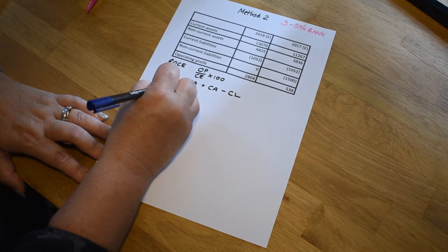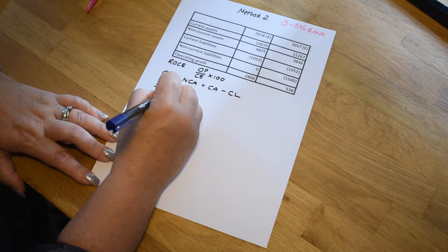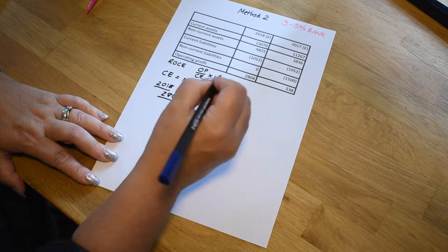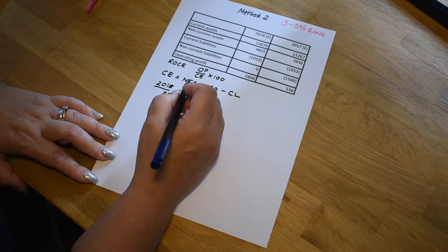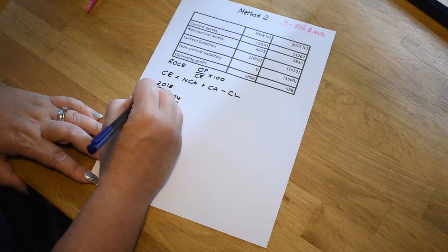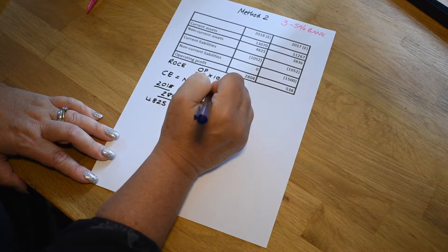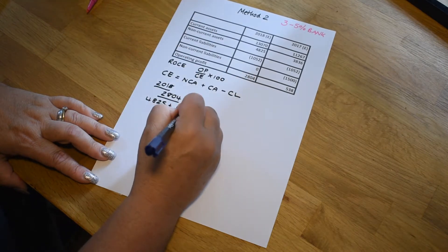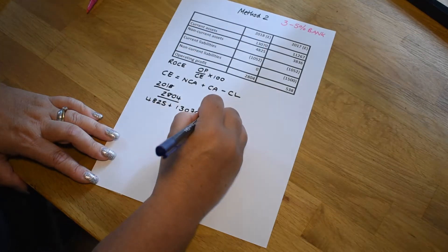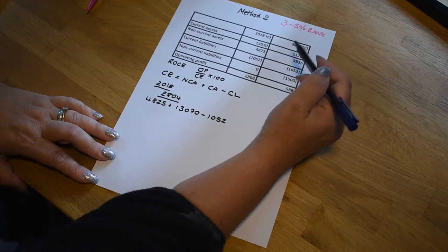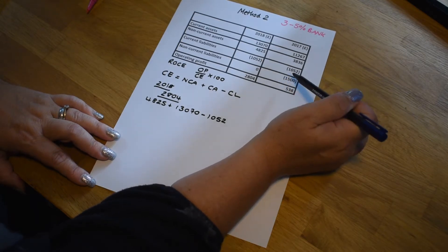We'll start with 2018. You can see that our operating profit we're just pulling straight out of the data is 2804. And now we need to find out what the capital employed figure is for that particular year. So non-current assets, 4825, add to current assets, 13 minus any current liabilities that we've got, which is here, 1052. Now notice that these are in brackets.